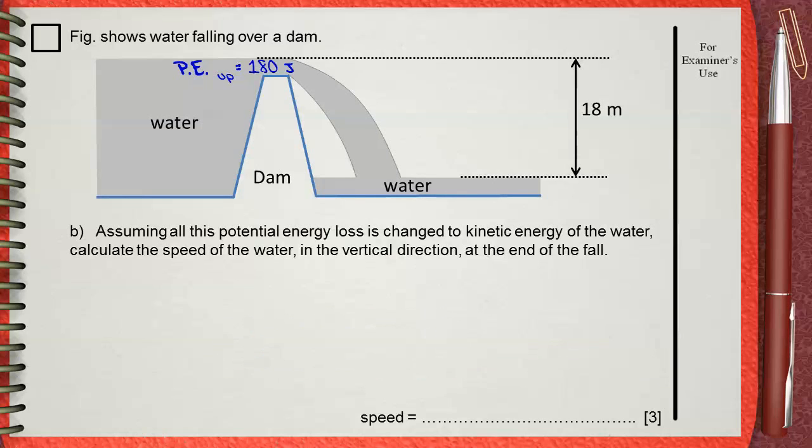If we assume that this is free fall, which means that no air resistance or friction. For free fall, the potential energy at the top for any falling object equals its kinetic energy down just before it hits the ground, or in our case hitting the surface of the water. This means that the kinetic energy down will be also 180 Joules. So for free fall, potential energy up equals kinetic energy down equals 180 Joules.